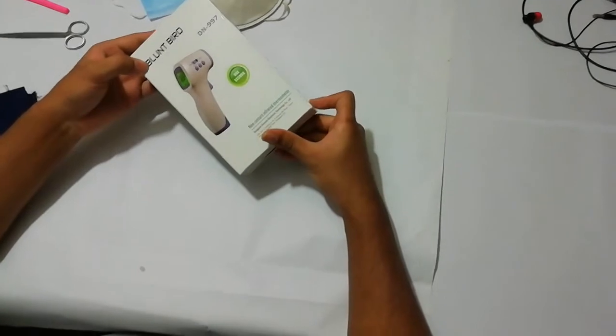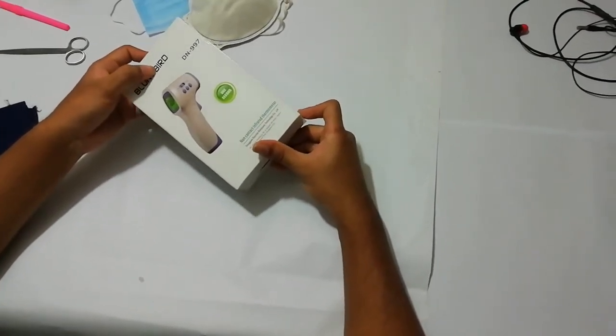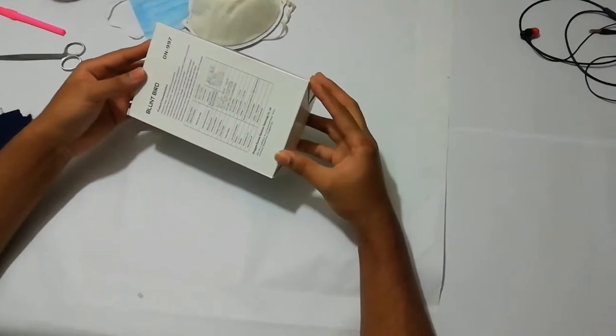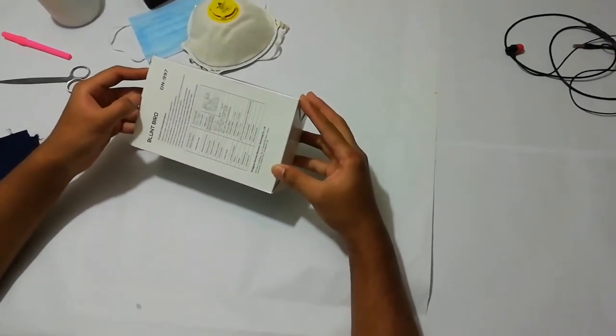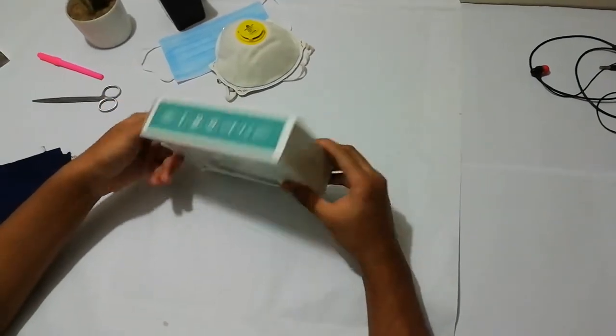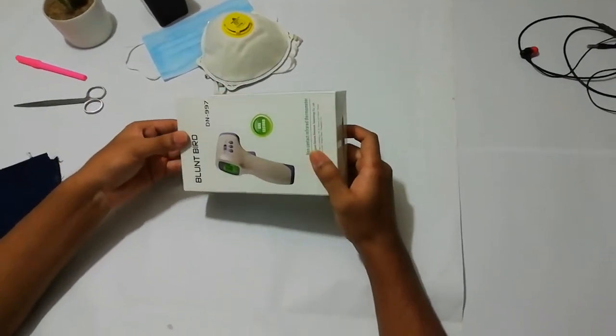First of all, we see the logo. The Blunt B-I-R-O D-N-997. It costs TK-1300 in Bangladesh Taka, and it is only available in Dara's online shop. Let's unbox it.